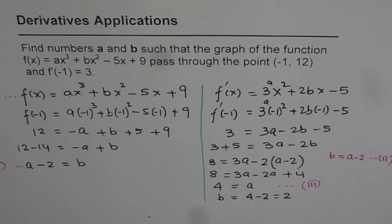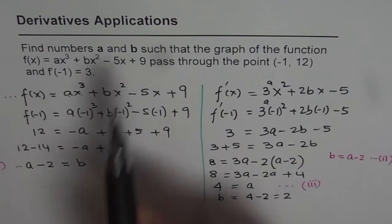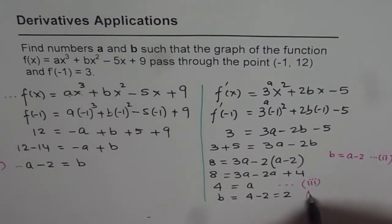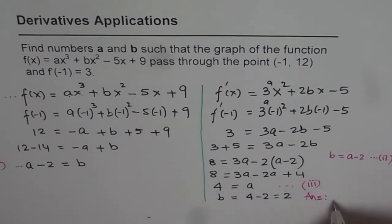So that is what we wanted. We wanted the values of a and b. So we can write down our answer. Answer is a equals 4, and b equals 2. So that is how we can solve for the two unknowns given to us.